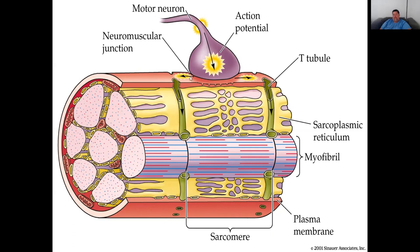That excitation — that action potential — then travels down the transverse tubules, or T-tubules. In close association with the sarcoplasmic reticulum, it causes calcium to be released. Protein junctions between the sarcoplasmic reticulum and the T-tubules open channels that allow calcium to be released. The calcium travels to the tropomyosin, moves it out of the way, and allows myosin to grab onto the actin, as covered in the previous lecture.